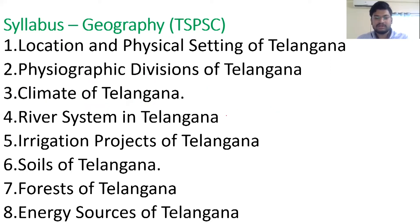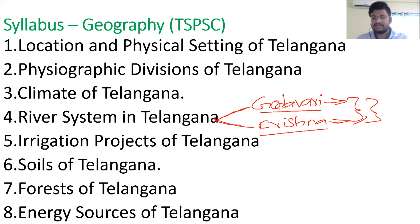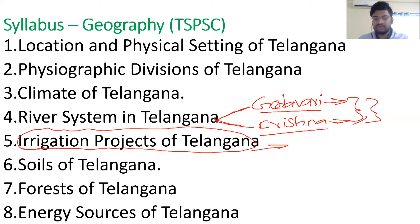The fourth chapter covers the river system in Telangana. Telangana has two major river systems: Godavari and Krishna. You should focus on the origin points of these rivers, meeting points of distributaries, districts through which each river flows, their length, and important projects and places on these rivers. The fifth topic is the major irrigation projects of Telangana — classification into major, minor, and medium projects, and ongoing current projects in the state.